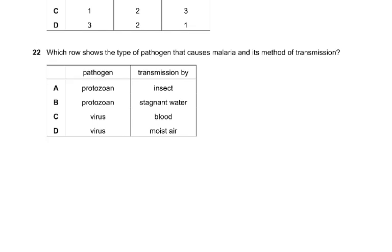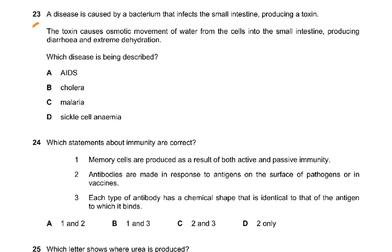Question 22: which row shows the type of pathogen that causes malaria and its method of transmission? It is a protozoan, so C and D are wrong. The answer is A — an insect is the vector which transmits it from one person to another.